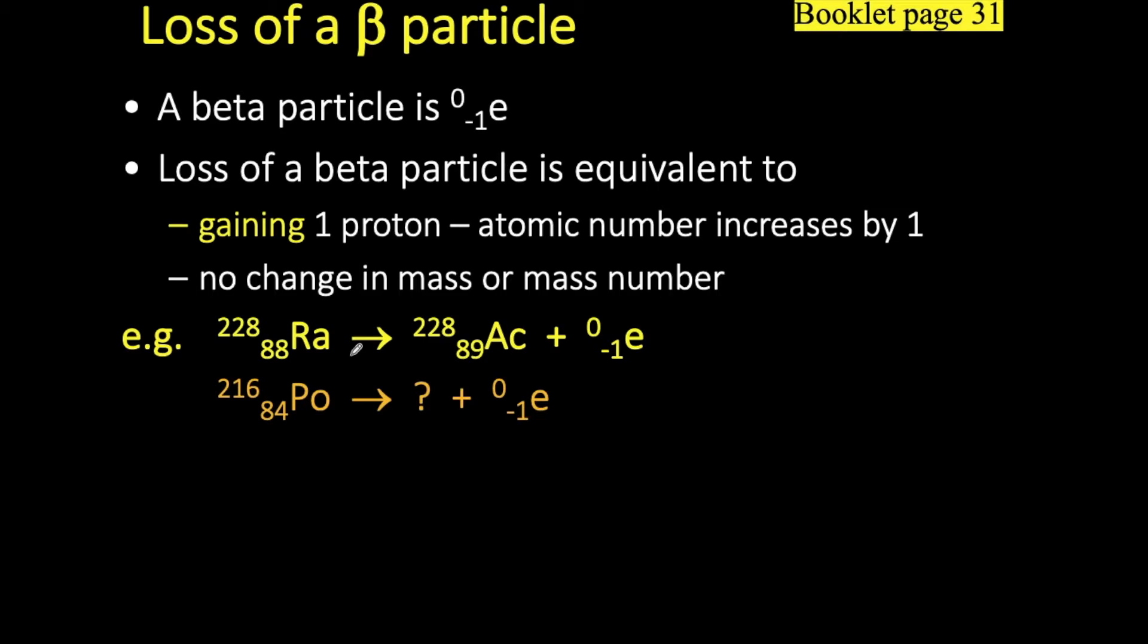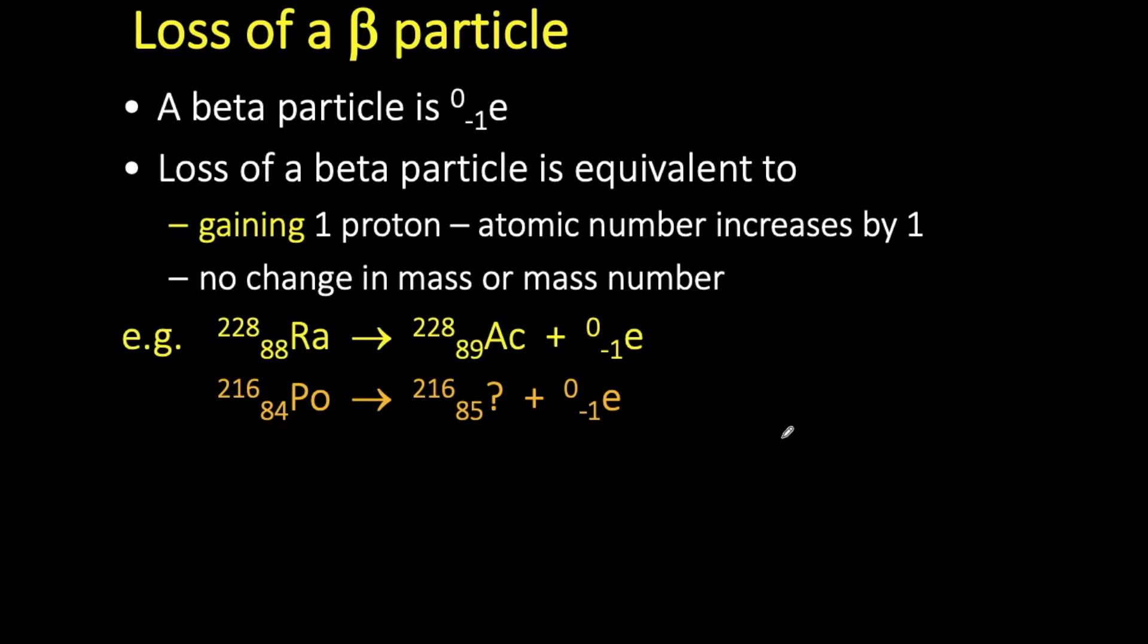So here is another example for us to work through. Polonium is undergoing beta decay. Which atom will it produce? Well, first of all, we know that there will be no change to the mass number, so it stays as 216. What does change is the atomic number. It goes up by one. If we use the atomic number to consult the data book, we can see that element number 85 is astatine. So when polonium undergoes radioactive decay, it produces astatine when losing a beta particle.